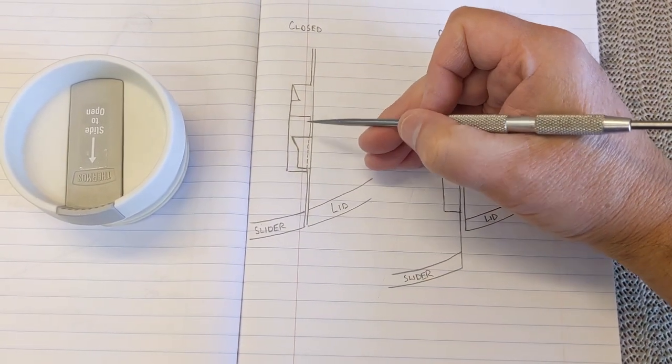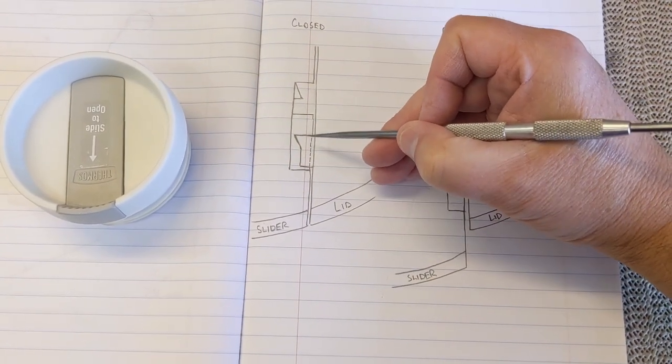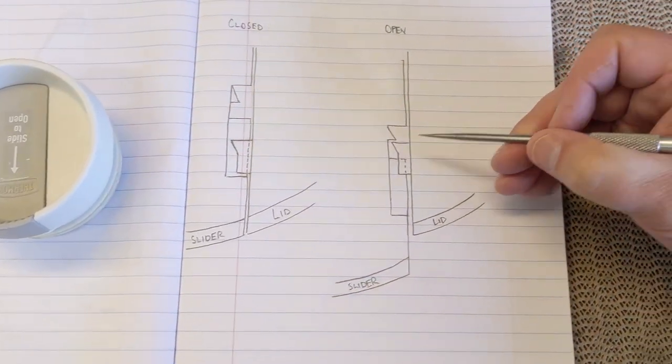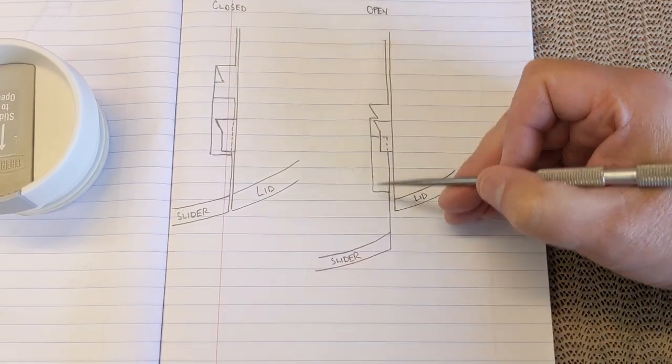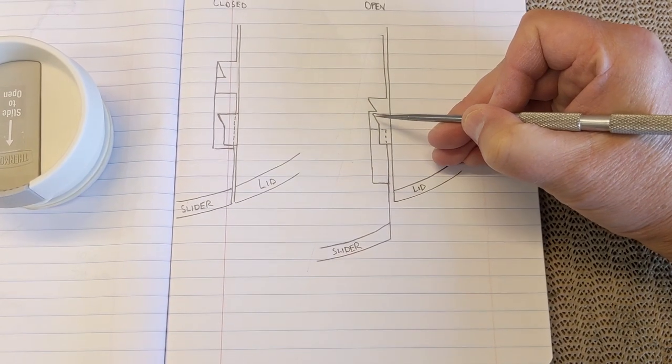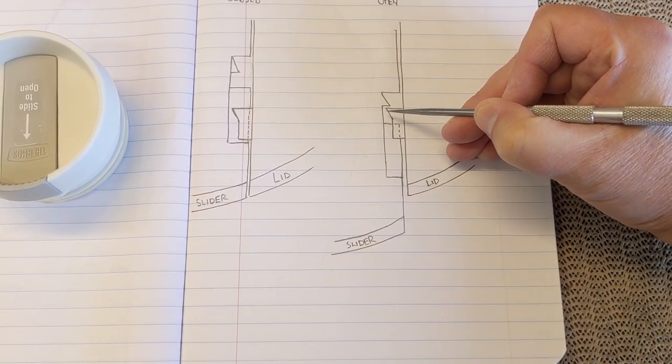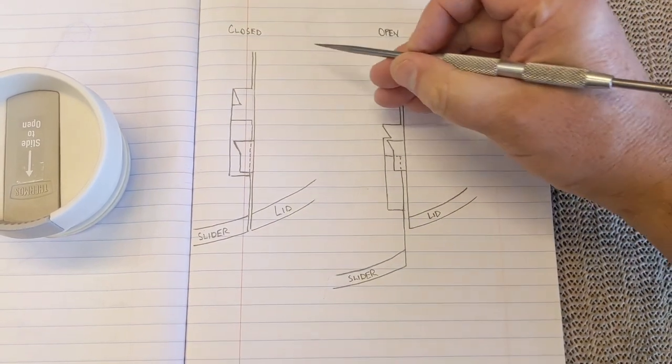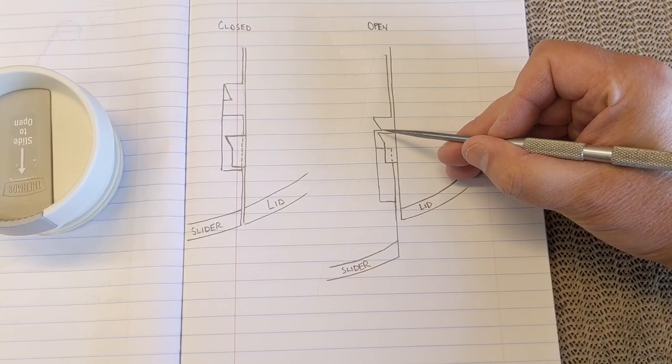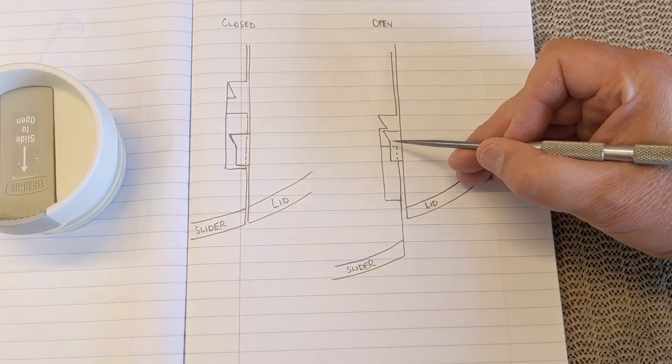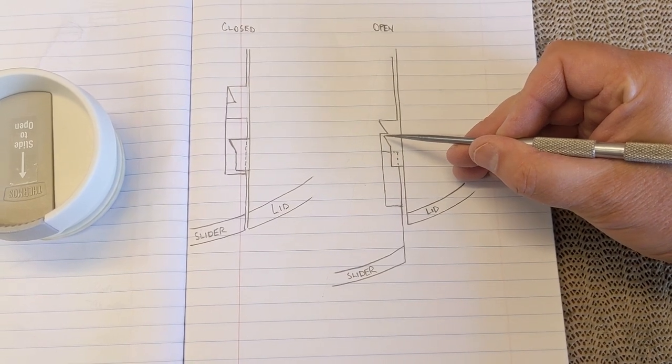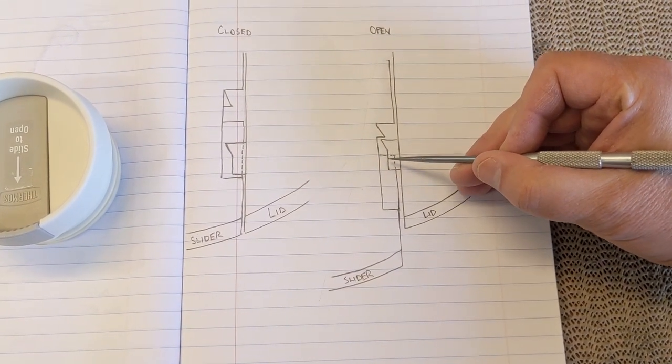As soon as you push the lid closed a little bit, this wedge has bypassed this wedge, so it will no longer open. Here's the closed position and open position, and you can see how it's being stopped from opening all the way. Because of these two stopping on each other, you can't open the lid all the way.